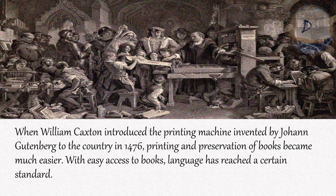When it comes to Modern English, which had stood out from other languages in Britain and become the dominant language, it began to approach its current form. When William Caxton introduced the printing machine invented by Johann Gutenberg to the country in 1476, printing and preservation of books became much easier, and with easy access to books, language reached a certain standard.